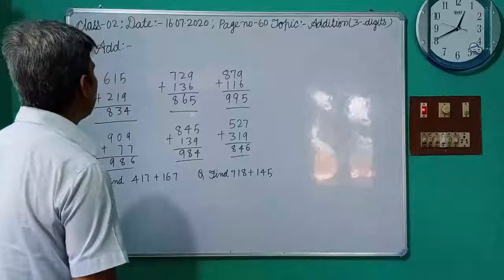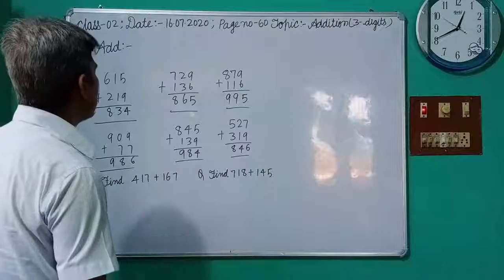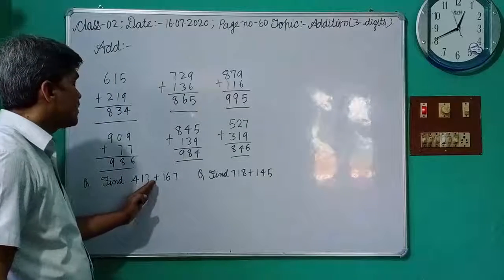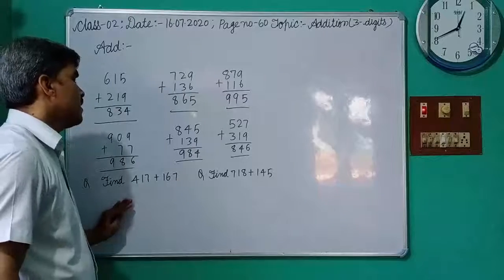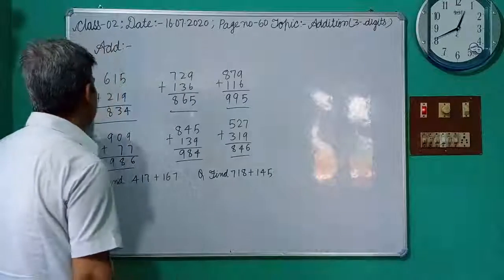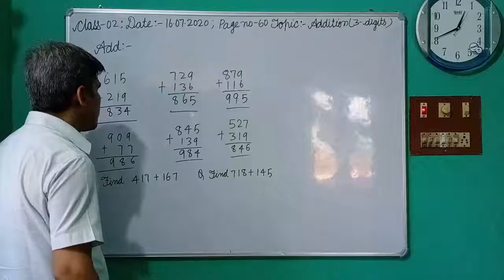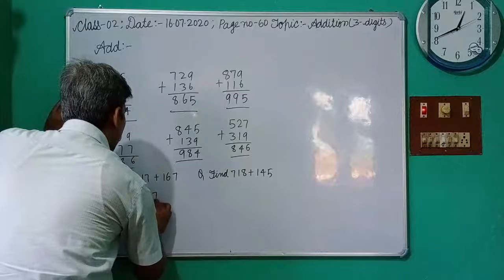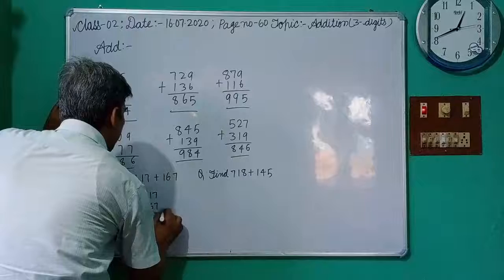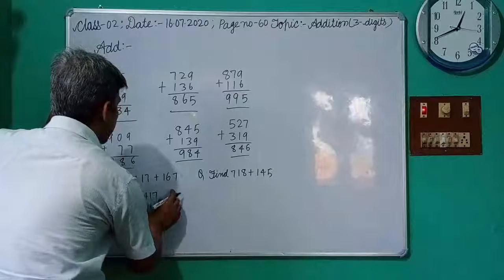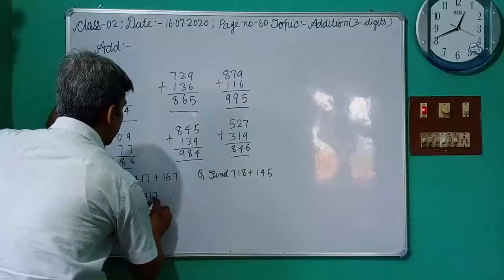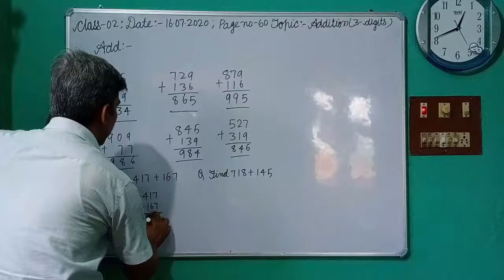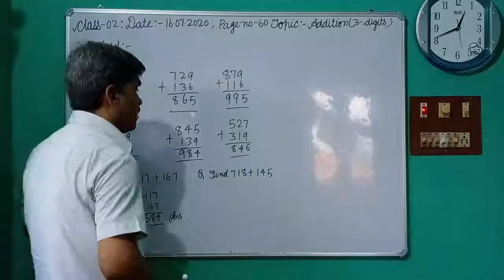This is the addition of 3 digit numbers with carrying, simple questions. Now last type questions: Find 417 plus 167. At first you write in column data. This is the column data. Write in addition form. So 417 plus 167. Now add them in ones place digits. At first: 7 plus 7 is 14. 4, 1. 6 plus 1 is 7, 7 plus 1 is 8. Here write down 8, no left. 4 plus 1 is 5. This is your answer.